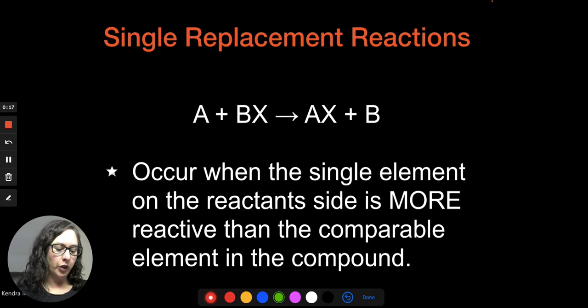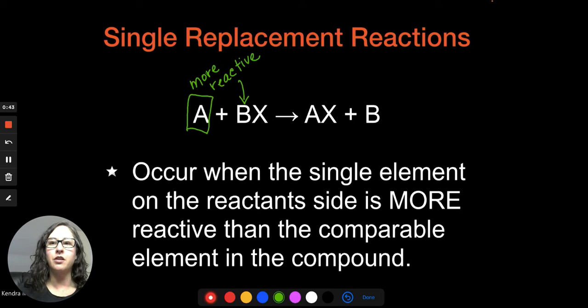It will only occur when the thing that's by itself, the single element, is more reactive than the comparable thing in the compound. For example, in this generic model, A has to be more reactive than what it's going to replace. In this case, that's going to be more reactive than B, because this is the way that this one's shown.